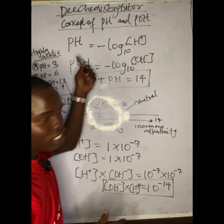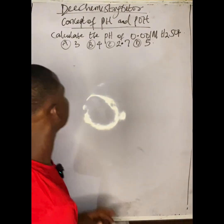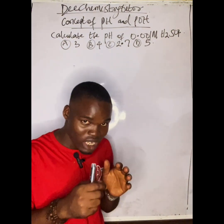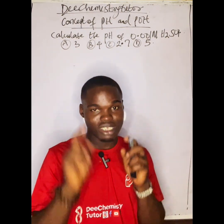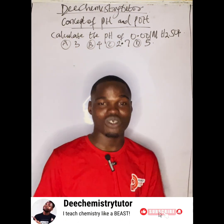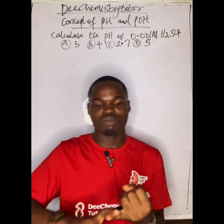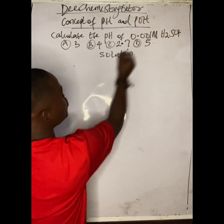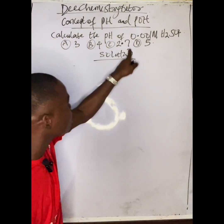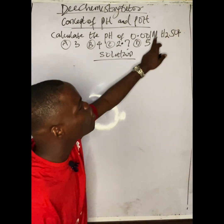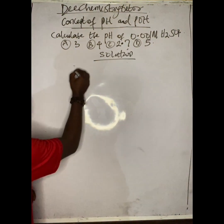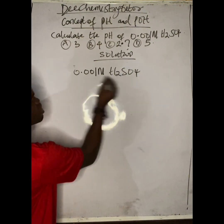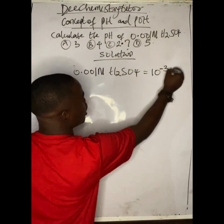Now let me show you how to solve pH calculation questions. Calculate the pH of 0.001 mol/L H₂SO₄. This is a question that most people will miss — in fact, I recall the University of Ibadan asked this exact question around 2018. What is given: 0.001 mol/L H₂SO₄, which is 10⁻³ mol/L H₂SO₄.